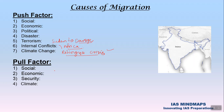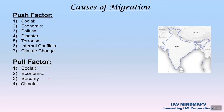Now let us discuss pull factors. Socially, various facilities available in urban areas attract people. Economically, better opportunities and better wages in urban areas are key pull factors. Security is a third aspect — the level of security in a destination city influences whether people choose to migrate there. Climate is also a pull factor; for example, pollution in Delhi may make people think twice before migrating there unless absolutely necessary.